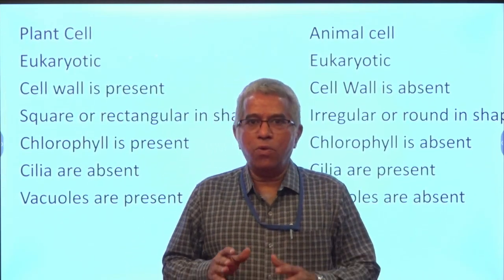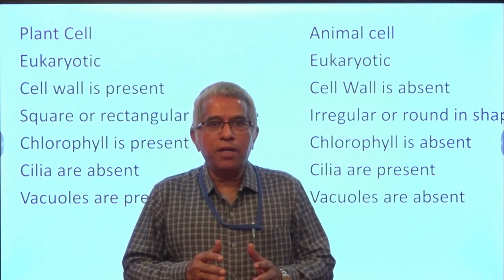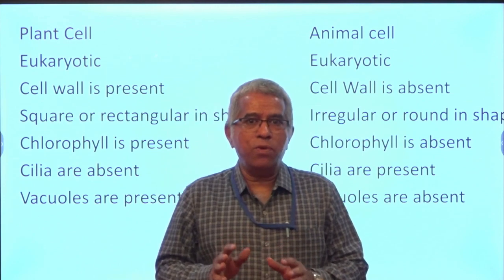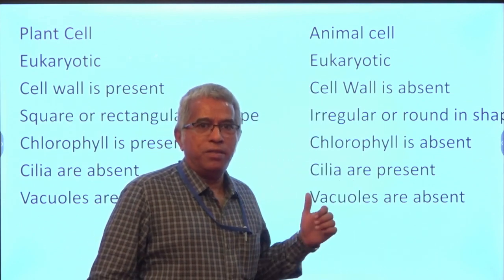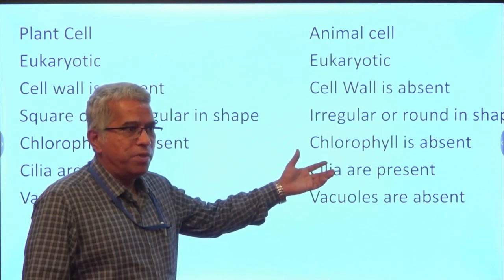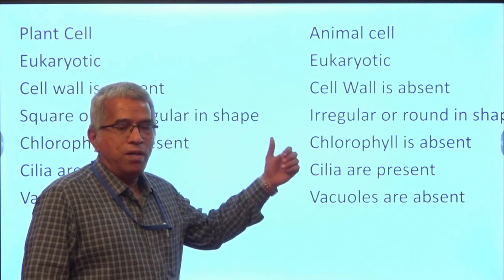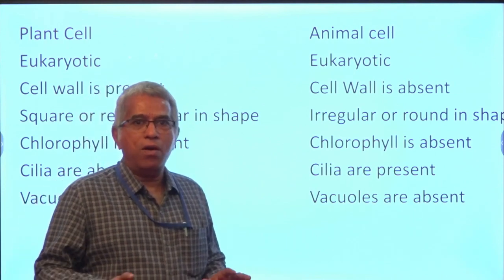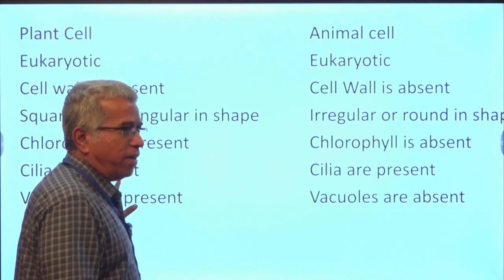Chlorophyll is present in the case of plant cells — this is a very unique character. Chlorophyll is a pigment which traps light energy and converts it into chemical energy. Such a mechanism, called photosynthesis, is exhibited by the plant cell, whereas in the case of animal cells such a pigment system is absent, so chlorophyll is absent and the photosynthetic mechanism is also absent in animal cells.